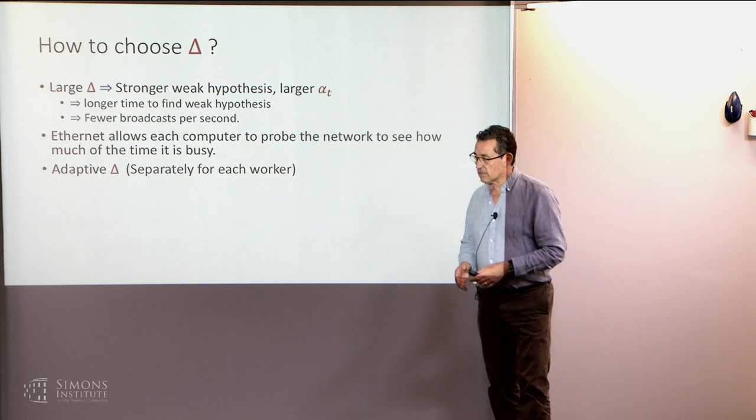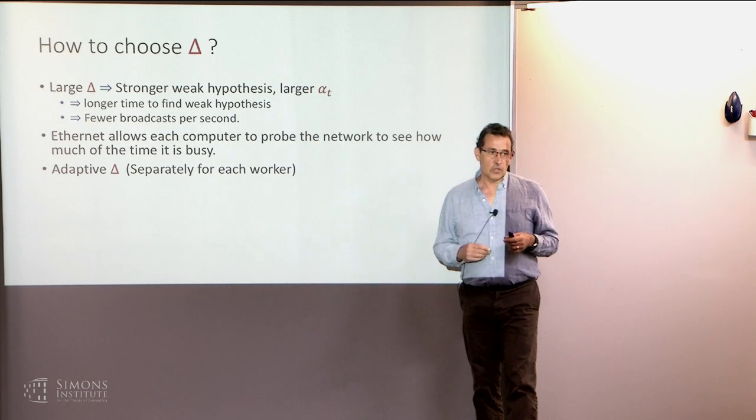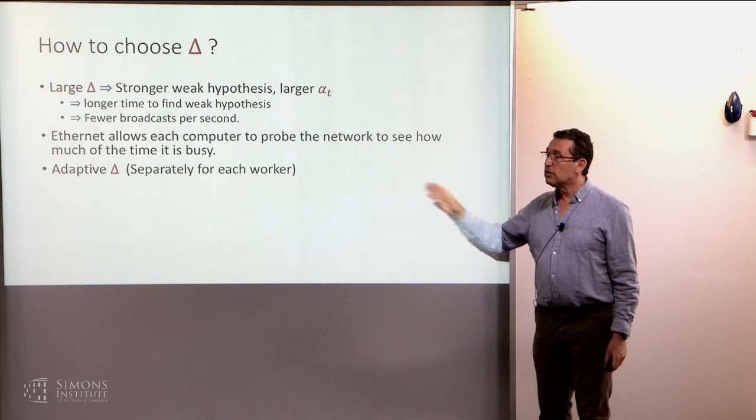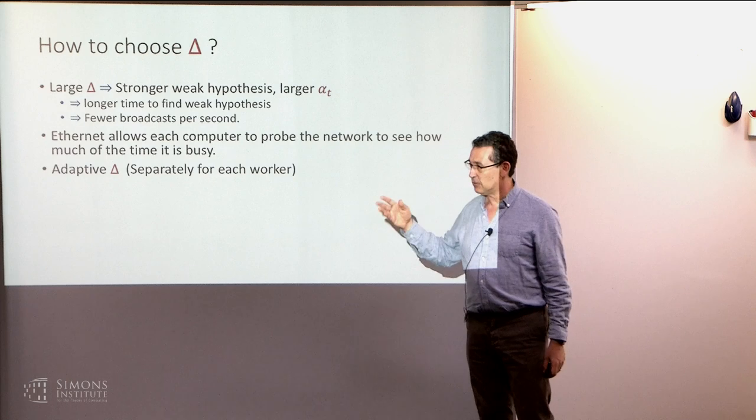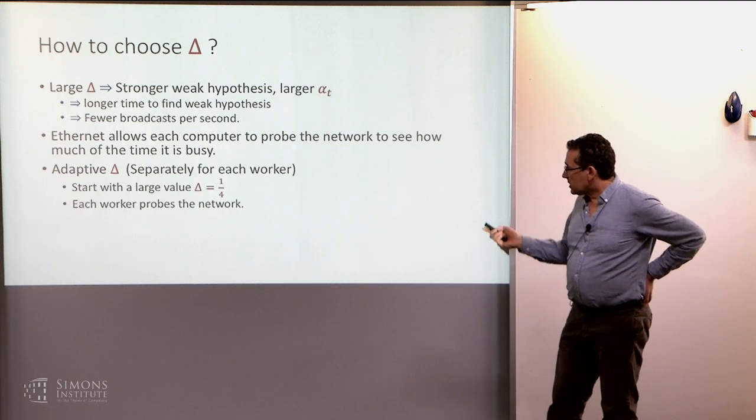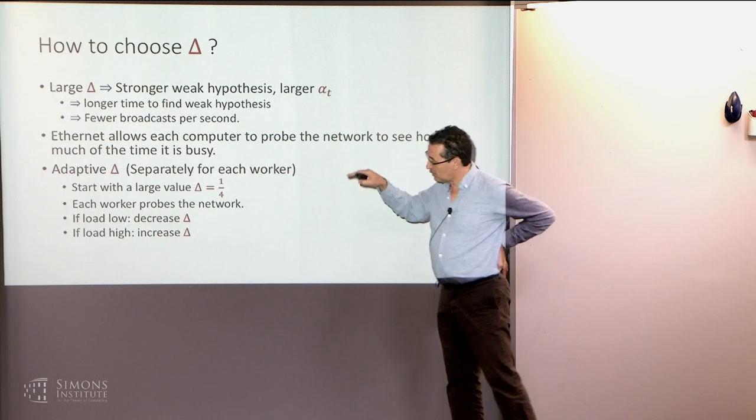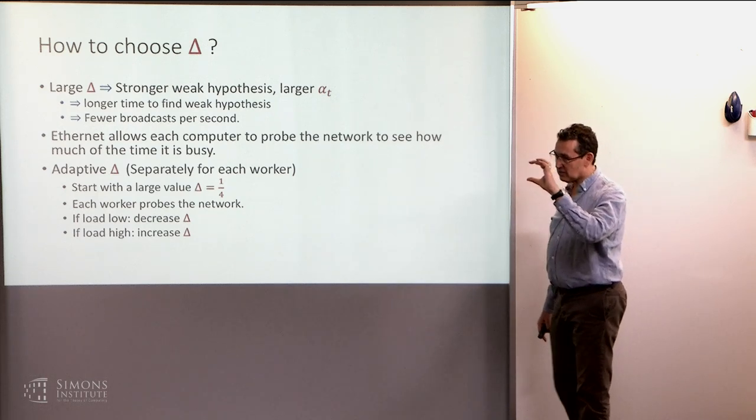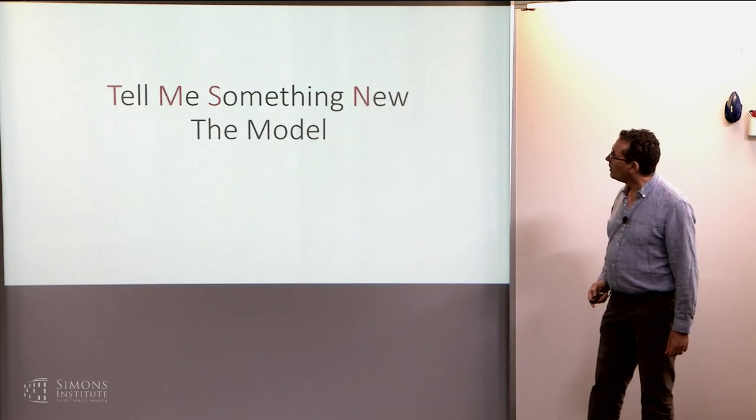Basically, it's kind of like this. Each computer is trying to tell everybody else something new. Trying to find something new to say. Now, if it is basically listening to the channel and everybody is speaking all the time, then it says, well, maybe I shouldn't talk so quickly. I mean, I should find something really new to say. So that's the intuition. So you start with some delta and then each worker probes the network. And if the load is low, it decreases delta. And if the load is high, it increases delta. Now, this is... I'm sorry. This delta is like a reminiscence from a previous version that I thought that the threshold should be fixed. But it's actually a slope. But the same thing holds.